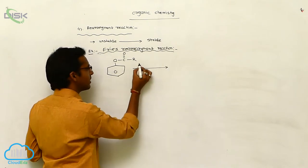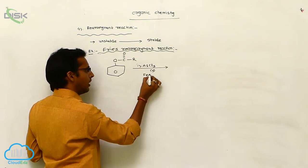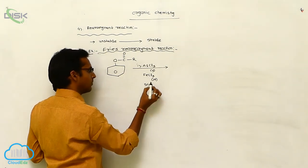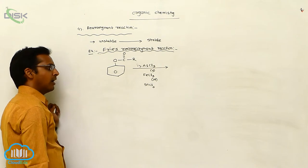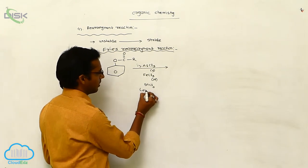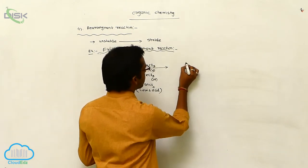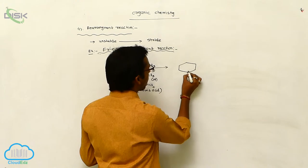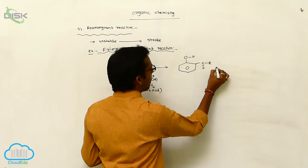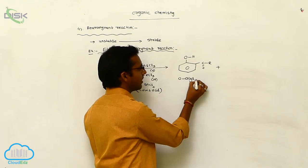In the Fries Rearrangement Reaction, in the presence of Lewis acids such as AlCl3 (aluminum chloride), FeCl3 (iron chloride), or SnCl4 (stannous chloride), two types of products are formed. One is the ortho product and one is the para product. The ortho product is orthoacylphenol, which contains an OH group and a C=O-R group at the ortho position.